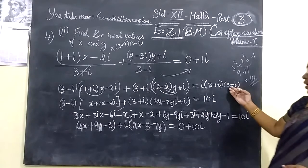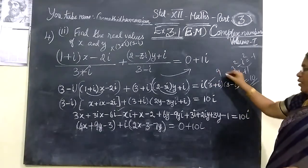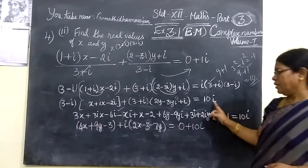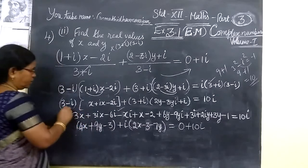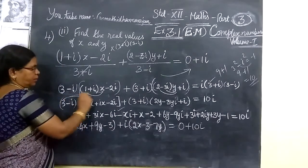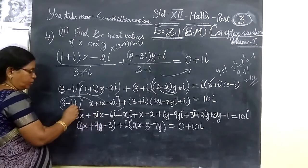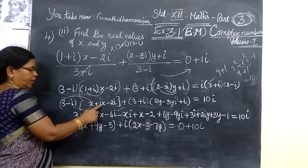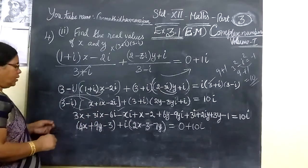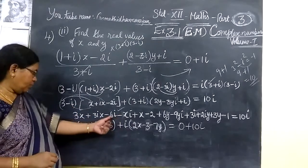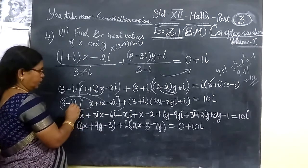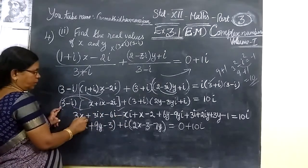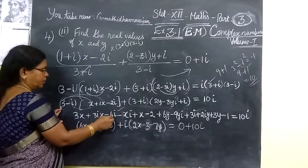So the denominator equals 10. Now you take the 3 inside: 3 into x gives 3x, then 3ix. Taking i inside: minus ix, then i into i is i², and i² equals minus 1, so that minus times minus gives plus x. So you are getting plus x.